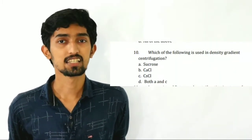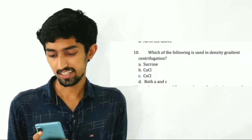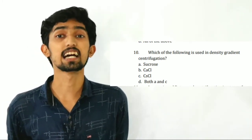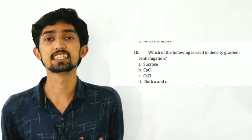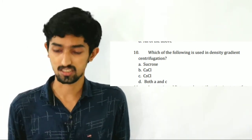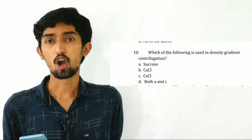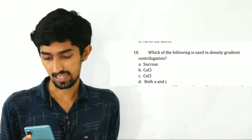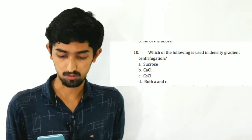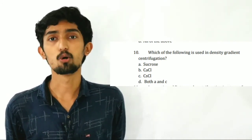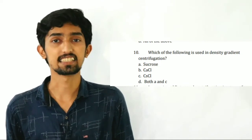Which of the following is used in density gradient centrifugation? Option A: Sucrose. Option B: Calcium Chloride. Option C: CsCl (Cesium Chloride). Option D: Both A and C. The answer is Both A and C.